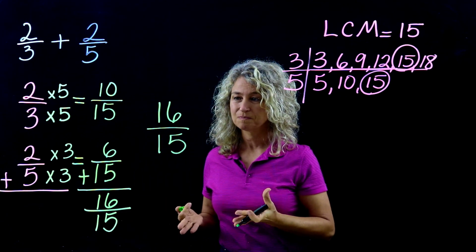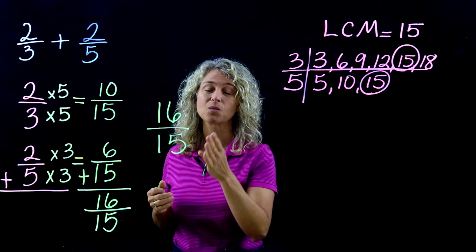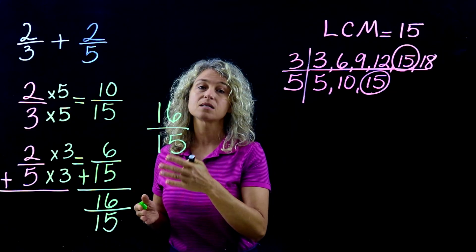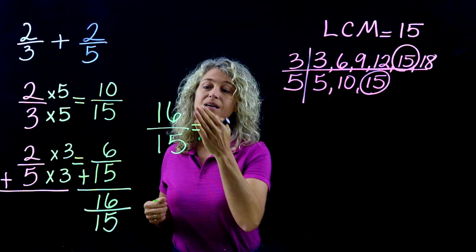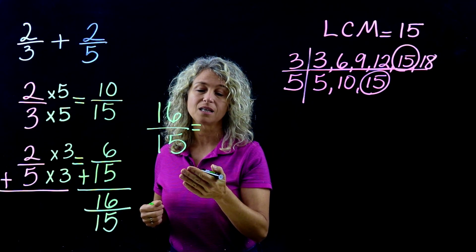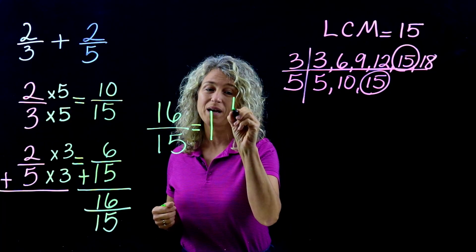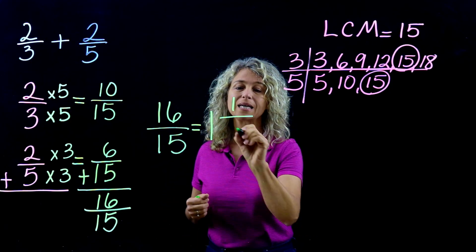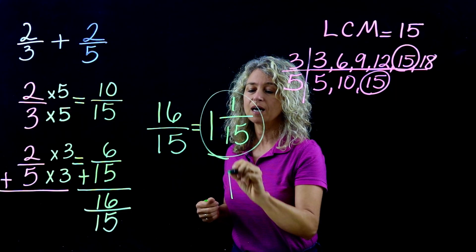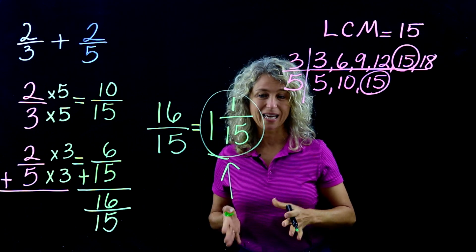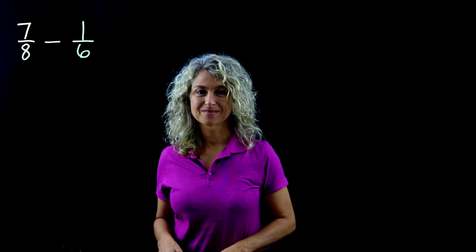16/15 is an improper fraction — most likely your teacher won't want you to turn in improper fractions. To simplify, change it to a mixed number: 16 divided by 15 is 1, because 15 fits in once with 1 left over, and 15 is your denominator. So your final answer is 1 and 1/15.